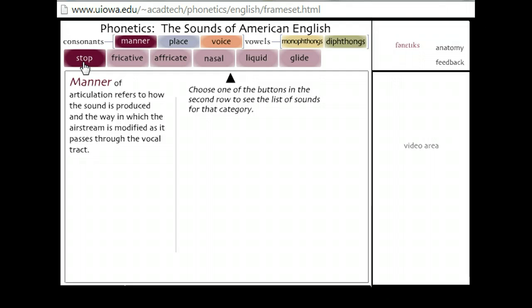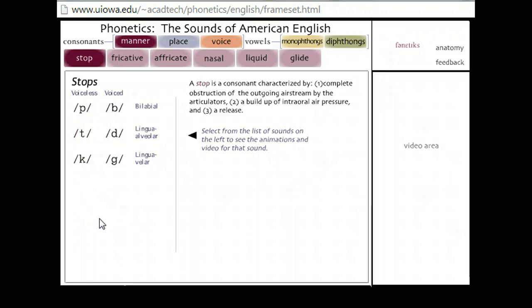Let's start here where it says stop, so we'll start with stop. If you click on stop, you'll see that this page has a listing of the sounds that have stops. A stop is a consonant characterized by a complete obstruction of the outgoing airstream by the articulators, a buildup of intraoral air pressure, and a release. So you may not find the wording helpful, or you may, depending on how much you have studied. But what can be very helpful is to find the sound that you are looking to practice.